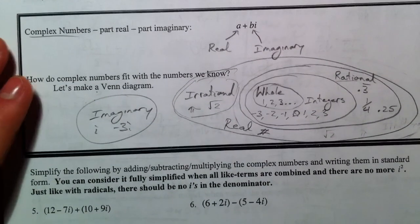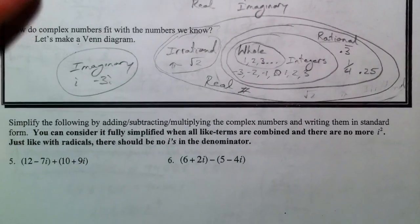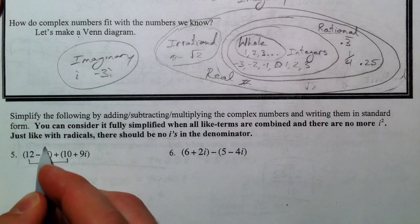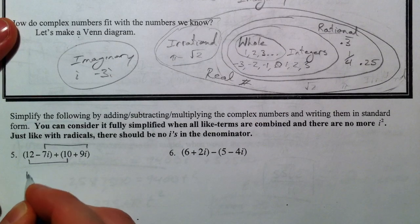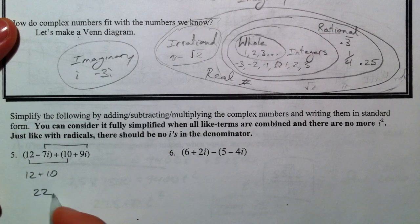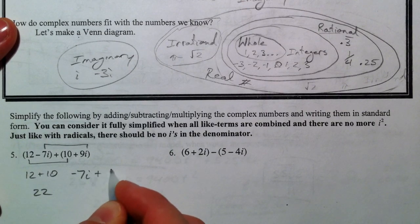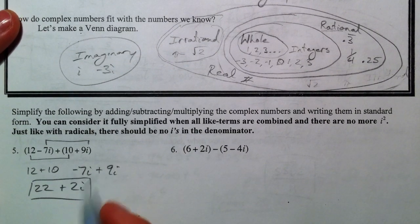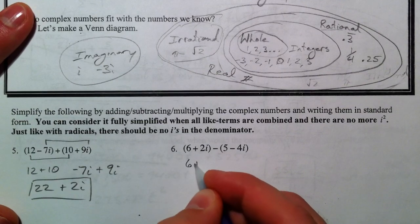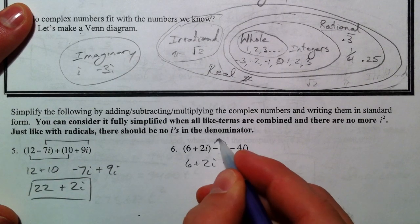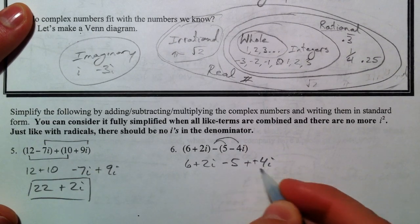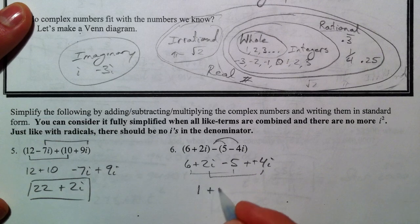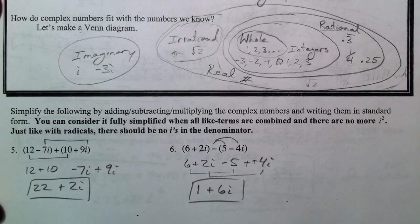We're going to add and subtract complex numbers. The nice part about adding complex numbers is that you add the reals and add the imaginaries. So you get 12 plus 10 is 22, and negative 7i plus 9i is plus 2i. When you subtract, like 6 + 2i minus (5 minus 4i), be careful: minus a negative 4i turns into plus 4i. So 6 minus 5 is 1, and 2i plus 4i is 6i, giving 1 + 6i.